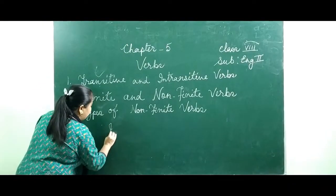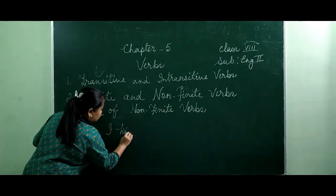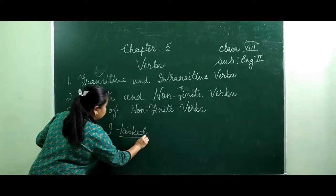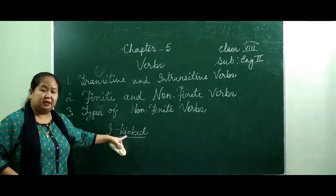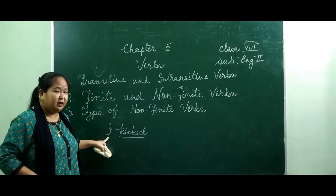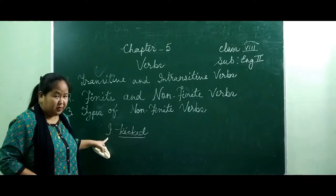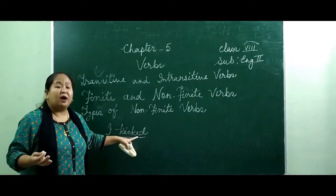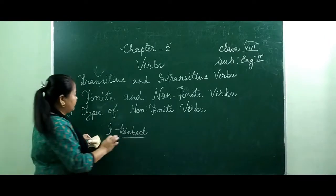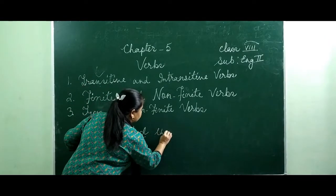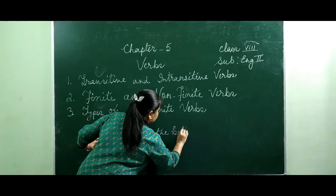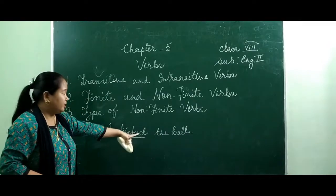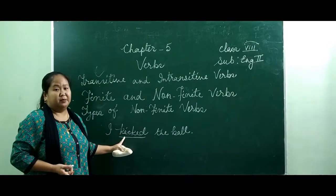For example, if I say 'I kicked' — this is the verb, but does it complete the meaning? It is not completed. You have a question in your mind: you kicked what? What did you kick? So if I say 'I kicked the ball,' now it completes the meaning. The verb takes an object to complete its meaning.